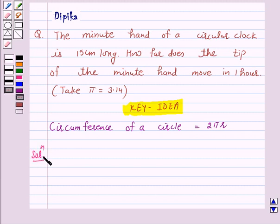Now according to the question, the minute hand of a circular clock is 15 cm long. This means the radius of the circular clock is equal to 15 cm.